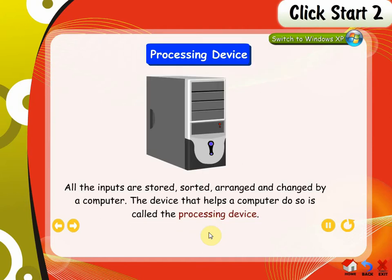Processing device. All the inputs are stored, sorted, arranged, and changed by a computer. The device that helps a computer do so is called the processing device. The processing device in a computer is known as the Central Processing Unit.